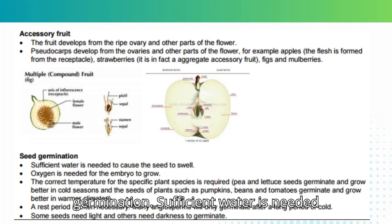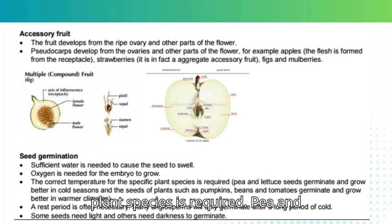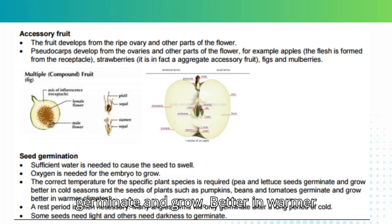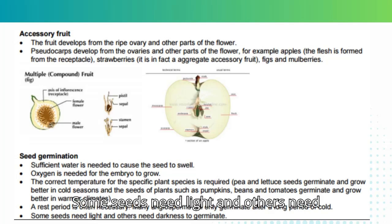Seed germination. Sufficient water is needed to cause the seed to swell. Oxygen is needed for the embryo to grow. The correct temperature for the specific plant species is required — pea and lettuce seeds germinate better in cold seasons, while seeds of pumpkins, beans and tomatoes germinate better in warmer climates. A rest period is often necessary. Many angiosperms will only germinate after a long period of cold. Some seeds need light and others need darkness to germinate.